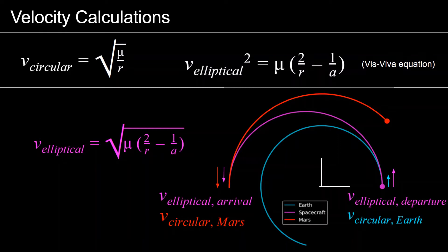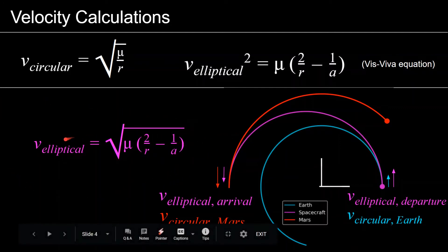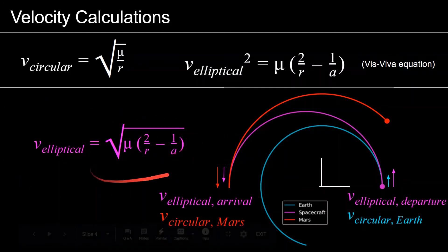The transfer orbit is elliptical, so its velocity is changing as its distance from the Sun is changing — the farther away it is, the slower it goes. We can calculate the transfer orbit velocity as a function of its distance from the Sun with the vis-viva equation: the velocity of an elliptical orbit squared is equal to mu times (2/r minus 1/a), where r is its current distance from the Sun and a is the semi-major axis of the transfer orbit. You can solve for velocity by taking the square root of both sides.